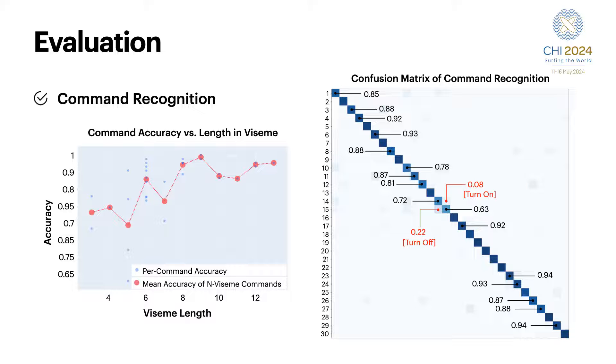For command detection, we conducted within-user and cross-user recognition tests. The average command detection accuracy was 91.33% within users and 74.88% across users. We observed that 30 commands were frequently confused due to the similarities in words and pronunciation, such as turn on and turn off. Additionally, we noted that commands with shorter viseme sequences tended to have higher error rates compared to those with longer sequences.